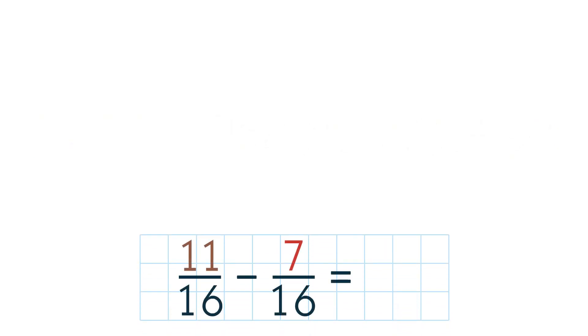Let's do another example. 11 sixteenths minus 7 sixteenths. Let's solve using a model. Imagine you have a chocolate bar.